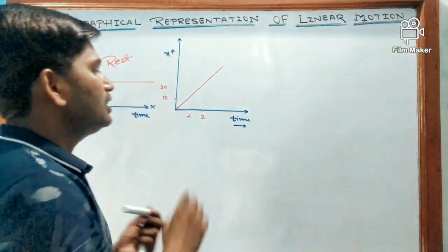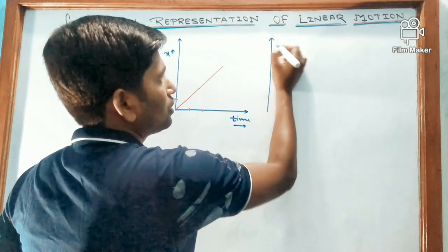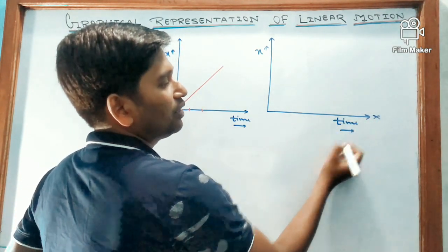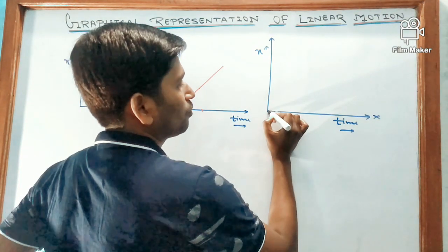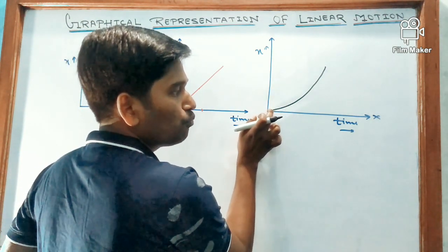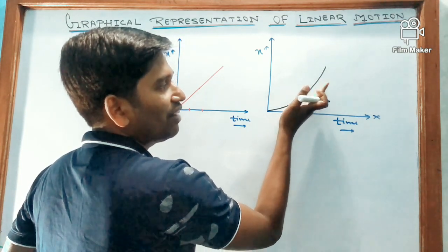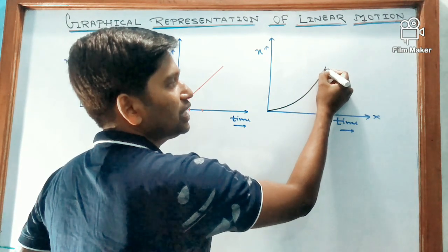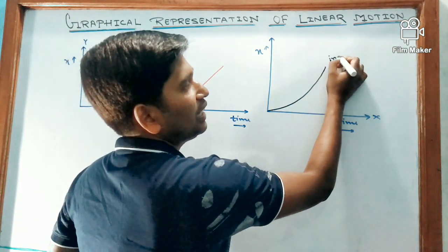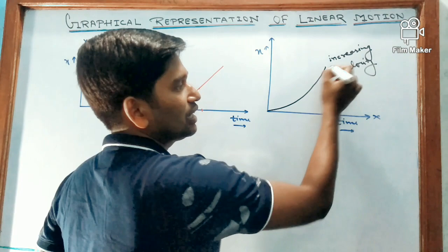Next graph: again we have the displacement axis and the time axis. A curve is represented where initially the graph moves more along the time axis compared to displacement, but after some time the displacement is increasing more while time taken is less. This type of graph represents increasing velocity.